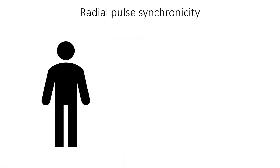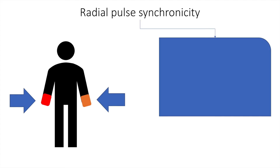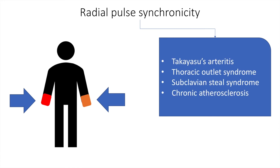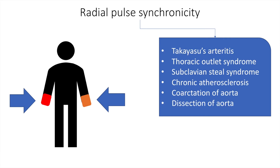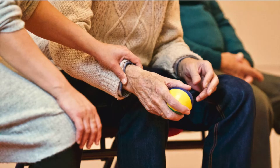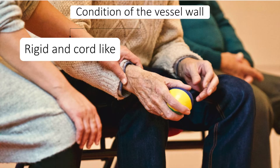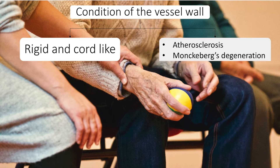Radial pulse synchronicity is an important finding in clinical examination. Essentially, we are looking for synchronicity between the right and the left radial pulse. This can be abnormal in conditions like Takayasu's arteritis, thoracic outlet syndrome, subclavian steal syndrome, chronic atherosclerosis, coarctation of aorta, and dissection of aorta. The condition of the vessel wall is important in the elderly, where it becomes rigid and cord-like, occurring in atherosclerosis or Monckeberg's degeneration.